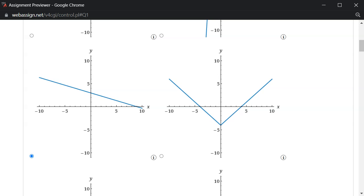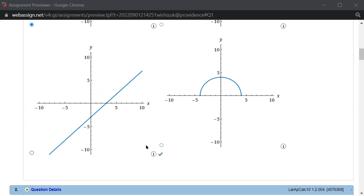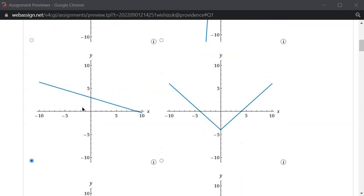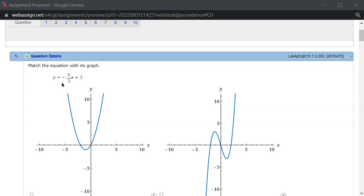Let's check the answer. I came back, and it looks like we got the check mark here, so we got this one correctly. This is the correct picture for this linear function, y equals negative one-third x plus 3.